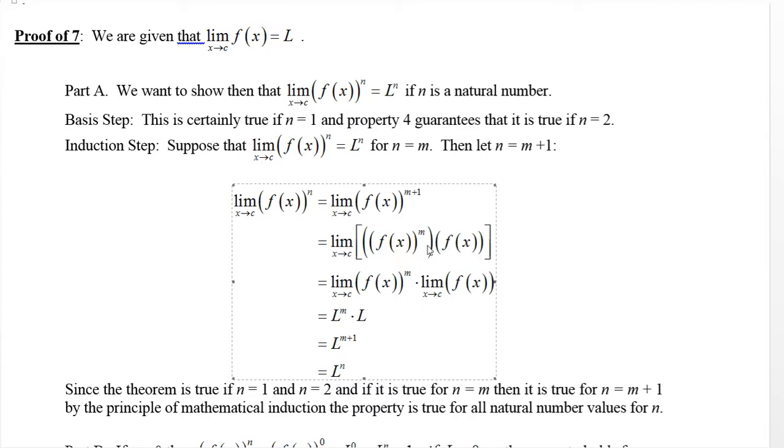Now we have a product of two things. So we can apply property four that says the limit of that product is a product of these two limits provided they both exist. Well the one on the right certainly exists. That's by hypothesis, that's just L. And our induction hypothesis says the one on the left exists and it's just L^m. Of course L^m times L^1 is L^(m+1), which is L^n. And so that's it.